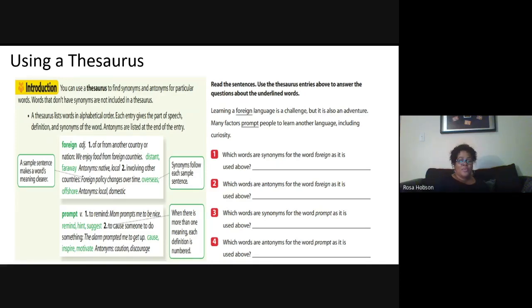Here we have the word foreign. It is a multiple meaning word because you see the number one and two. It has two different definitions, two different meanings, but both meanings are adjectives. In the first definition it says of or from another country. Here we have a sample sentence to help us get a clearer meaning of the word. We enjoy food from foreign countries. Then we have the synonyms distant and far away. They mean the same as foreign. There are also antonyms listed. These are the words that mean the opposite of foreign. So the opposite of foreign is native and local.